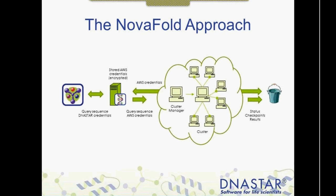Because of the large computational power this method necessitates, NovaFold uses the Amazon Cloud. Your query sequence is submitted on your desktop computer within Protein3D. With your Amazon Web Services credentials, the sequence is sent to a cluster of computers on the Amazon Cloud, where the actual structure prediction computations take place. When complete, the predicted models are returned to the desktop computer and Protein3D for your analysis. Millions of small computations take place to build the final model, and by using the cloud, many can be done at once so predictions are returned faster.